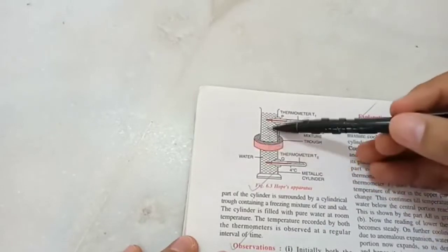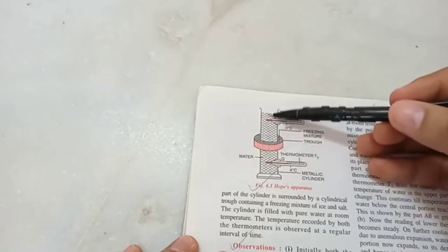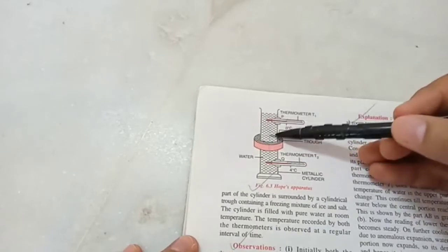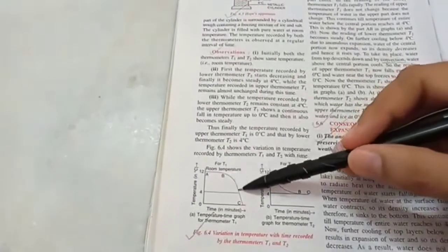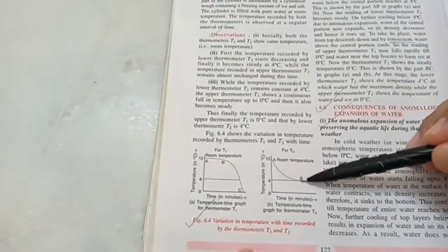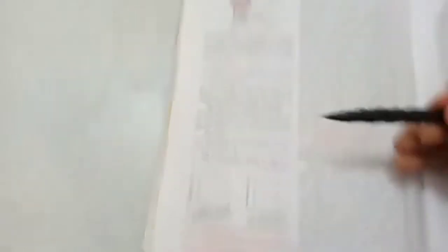Now the top water starts cooling. Now the heat from the top water is escaping. And slowly even the top portion reaches 4 degree Celsius. So now the entire water column is at 4 degree Celsius. See now even that is at 4 degree Celsius. And even this one is at 4 degree Celsius. Now what? Now the temperature has to drop further.